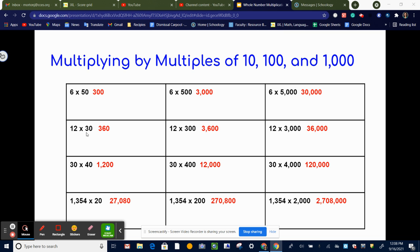So 12 times 3 is 36, and then you just add one zero because we're multiplying by 30. Here, 12 times 3 is 36, but we're adding two zeros this time because we're multiplying by 300.